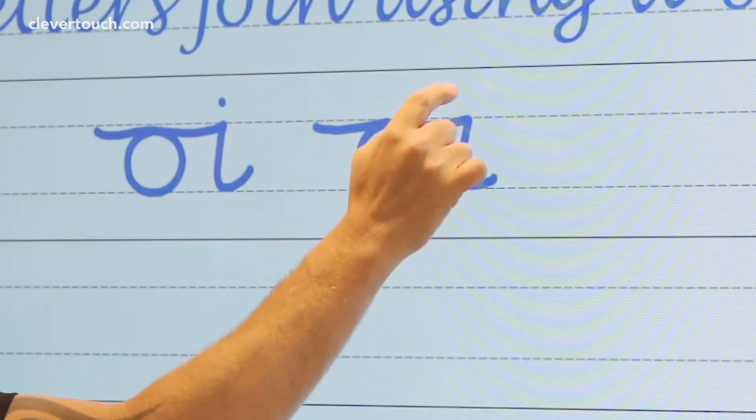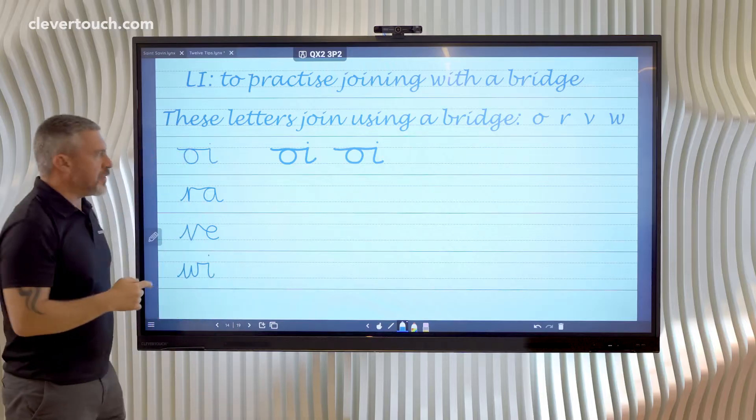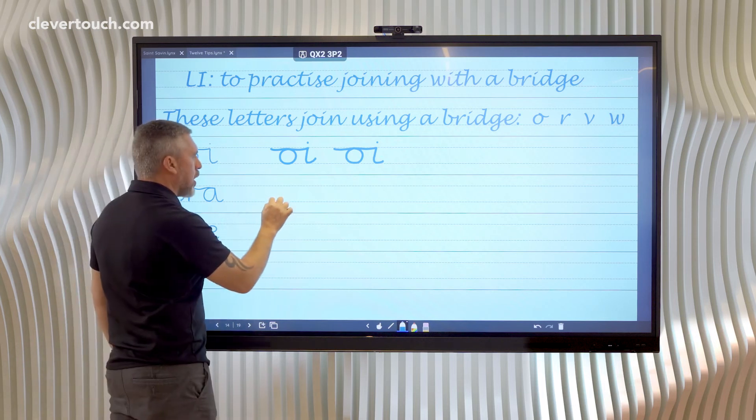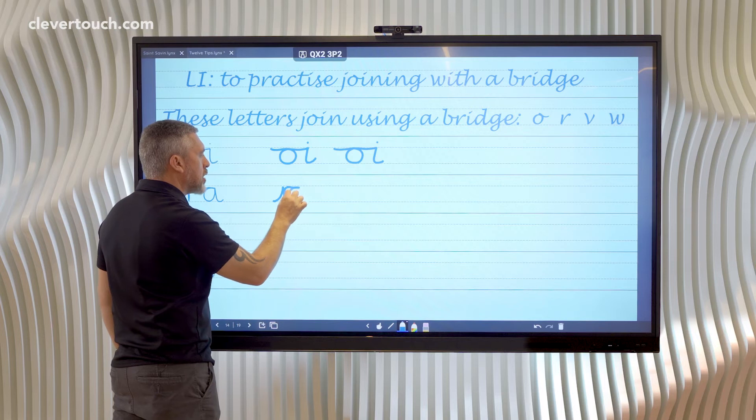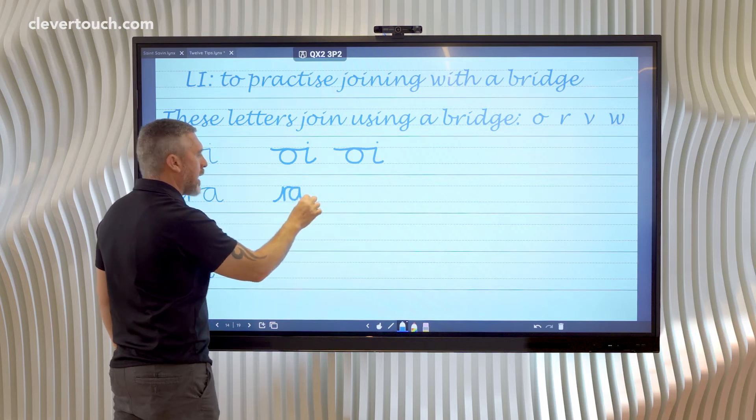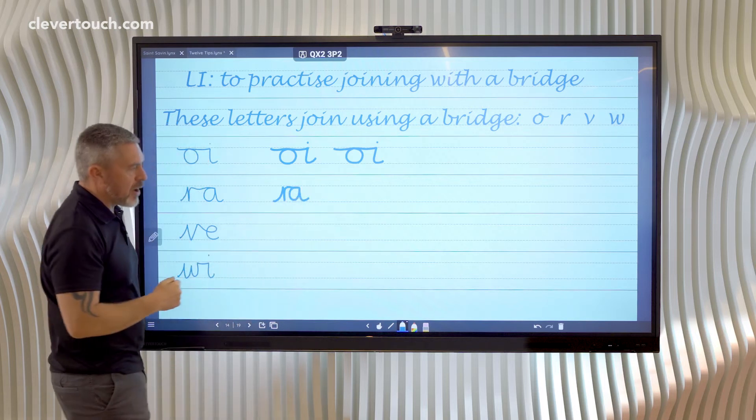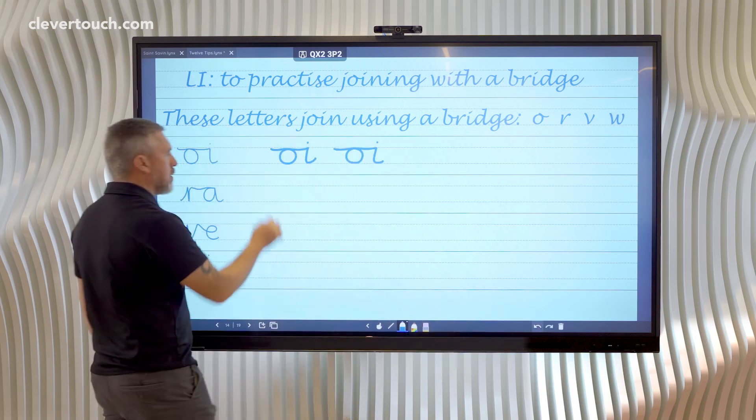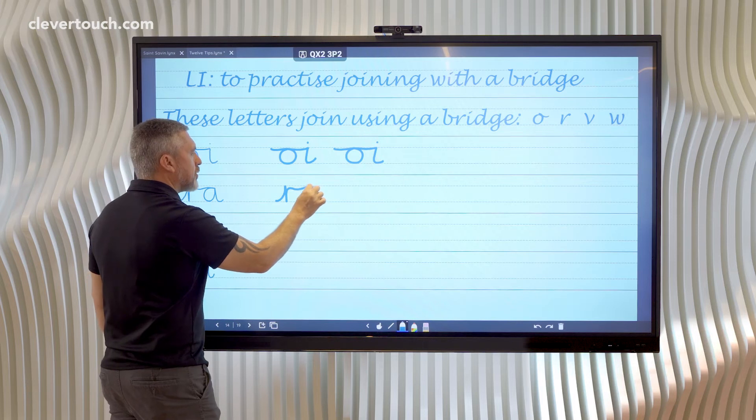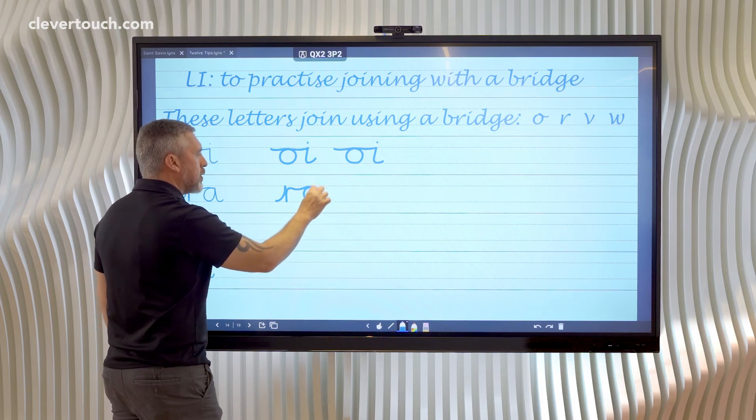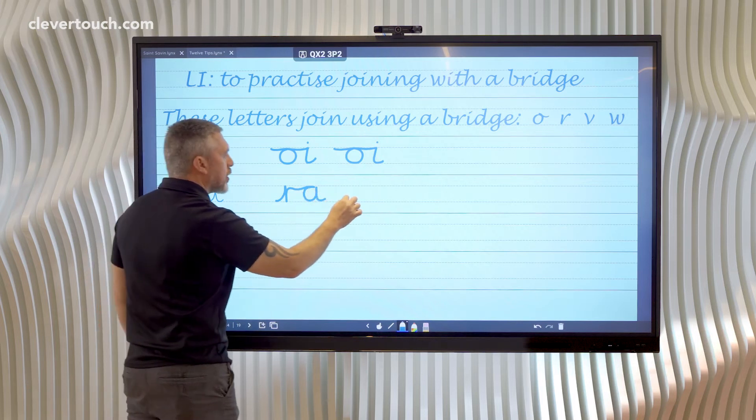This is really important on the second join, R to an A, because if we don't do the bridge long enough, you can see that the A is far too close to the R. So I'm going to undo that mistake and I'm going to go across and come back and do my A.